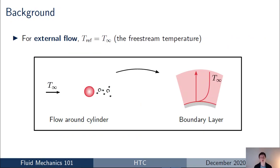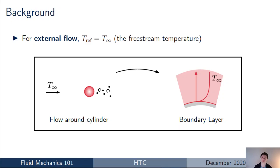First I'm going to start with a very simple case which is external flow. If you took an example of flow over a cylinder, an aerofoil, or an object, it's common in the definition of the heat transfer coefficient to take the reference temperature as the temperature far away from the object — the free stream temperature T_infinity. For CFD calculations that's quite likely to be either the inlet temperature to your domain or the temperature in the far field. So external flow is fairly straightforward — we know what reference temperature we're going to use.